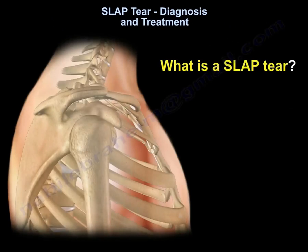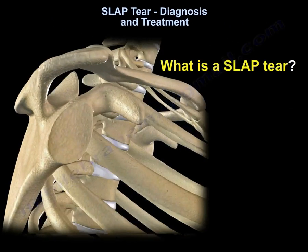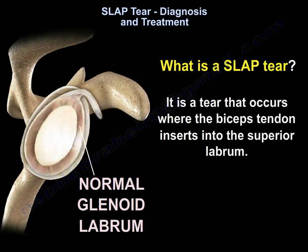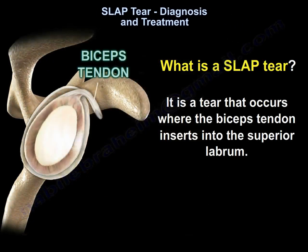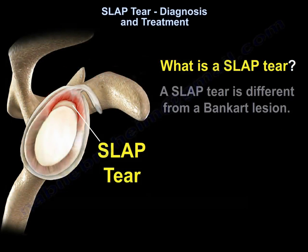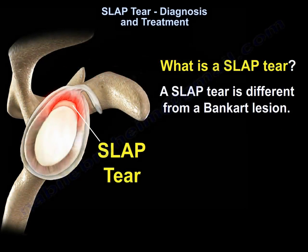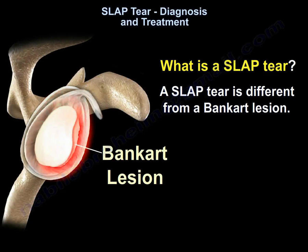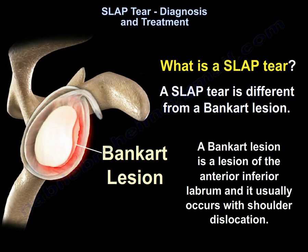SLAP tear: diagnosis and treatment. A SLAP tear is a tear that occurs where the biceps tendon inserts into the superior labrum. A SLAP tear is different from a Bankart lesion. A Bankart lesion is a lesion of the anterior inferior labrum and it usually occurs with shoulder dislocation.